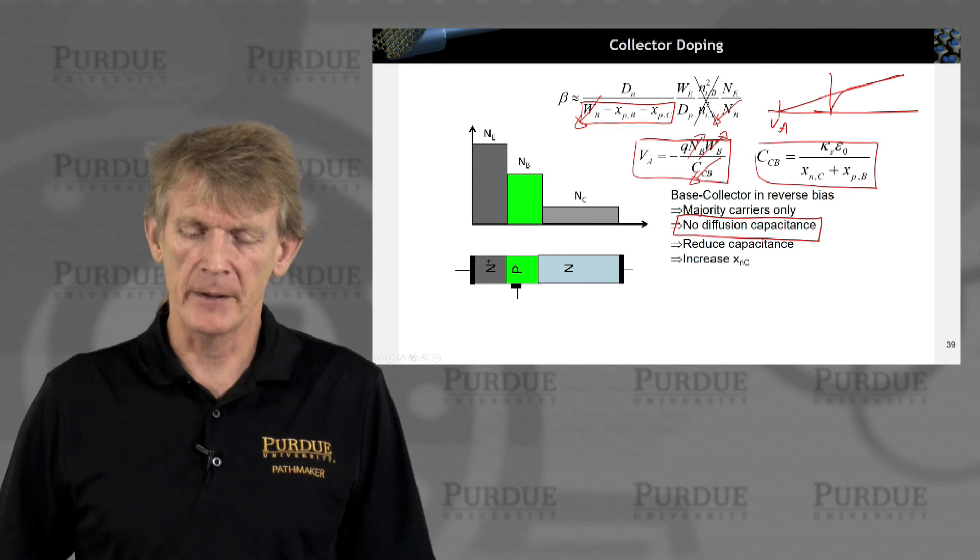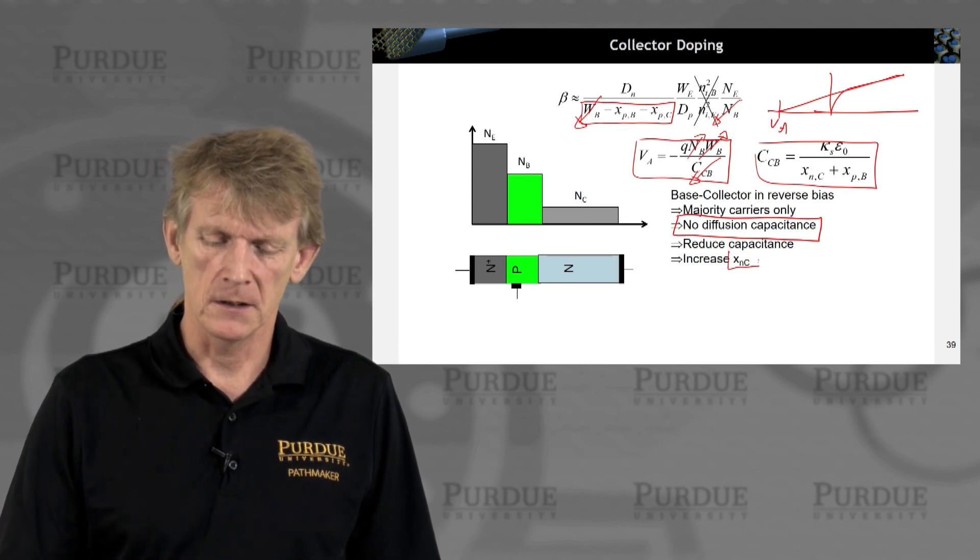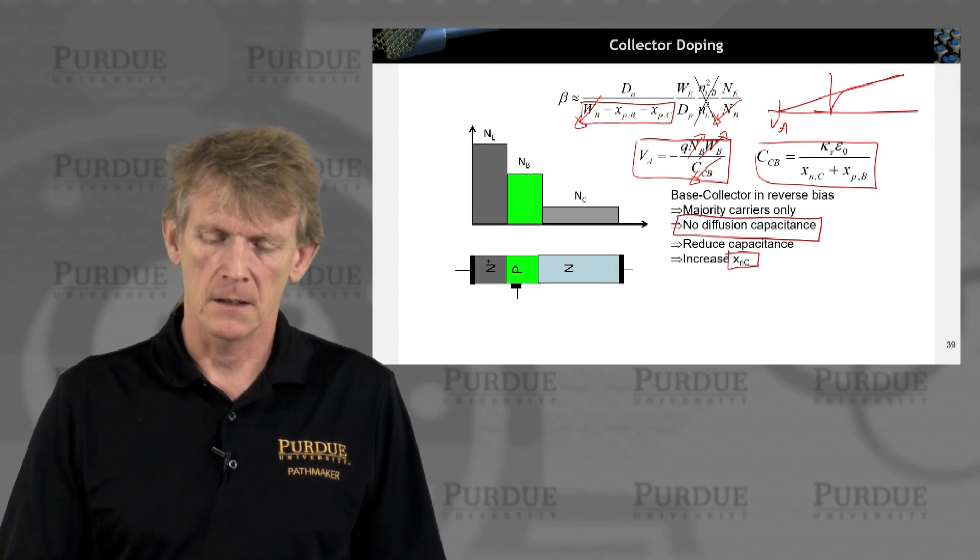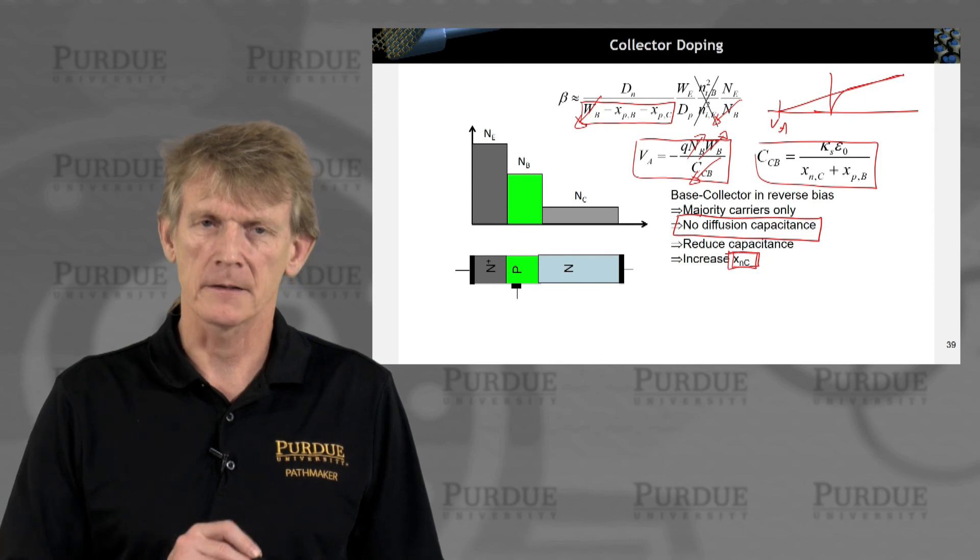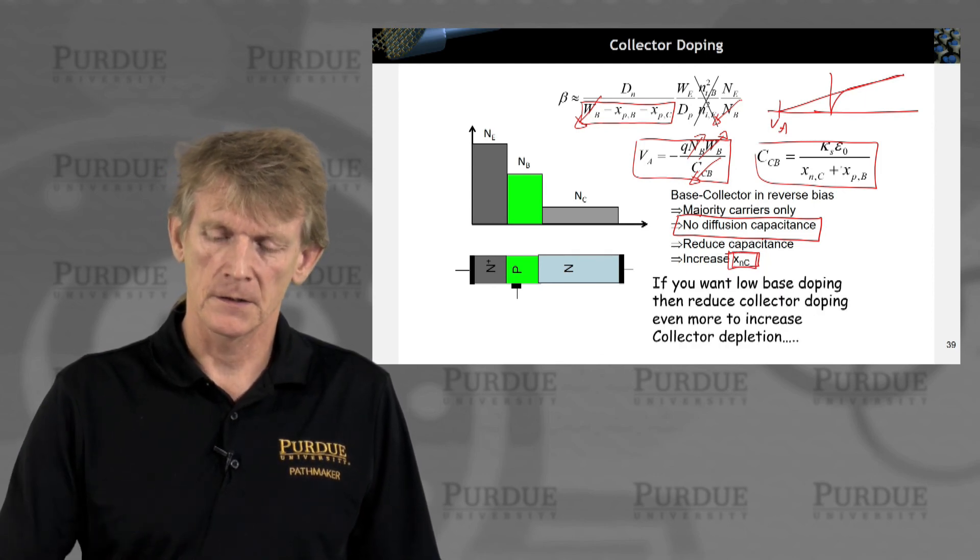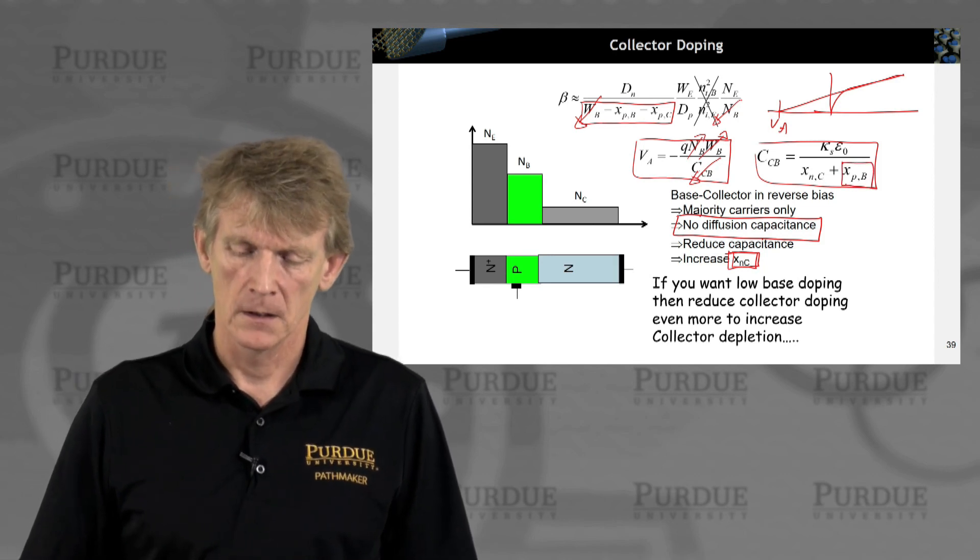If we can reduce this capacitance, we could increase the depletion region on the collector side, of the N in the collector, not the P in the base, the N in the collector.